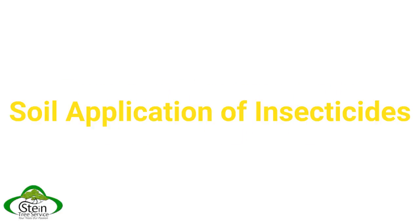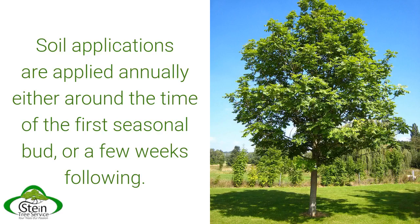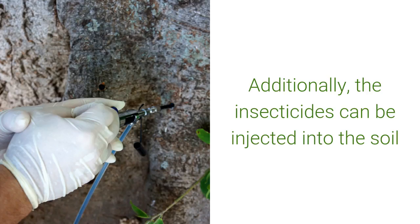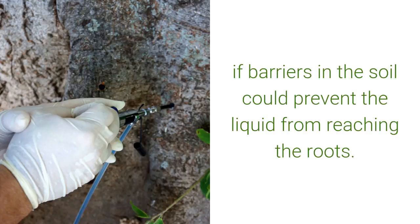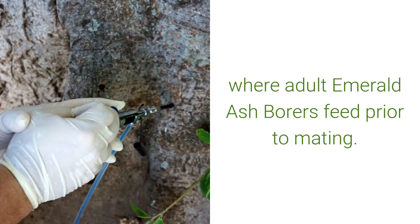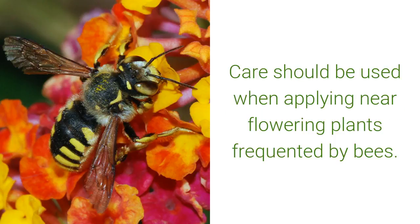Soil applications are applied annually either around the time of the first seasonal bud or a few weeks following. The soil surrounding the infected trees is doused in special insecticides, which can also be injected into the soil if barriers could prevent the liquid from reaching the roots. Over the course of several weeks, the insecticide is carried from the roots to the top layer of leaves where adult emerald ash borers feed prior to mating. Care should be used when applying near flowering plants frequented by bees.